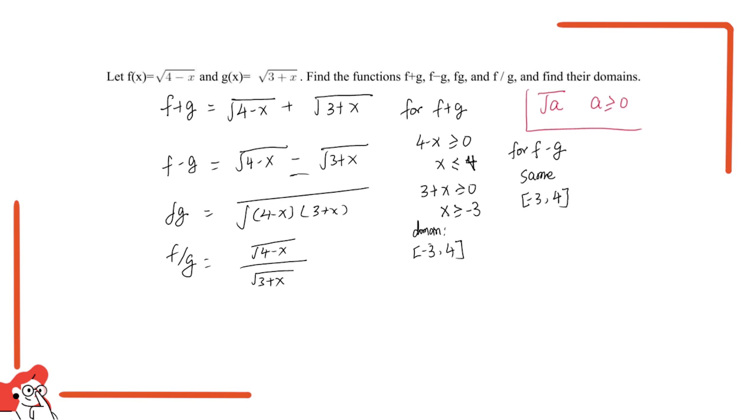For f times g, it's a little bit different. For f times g, we need to know that this has to be greater or equal to 0. That means 4 minus x has to be greater or equal to 0.